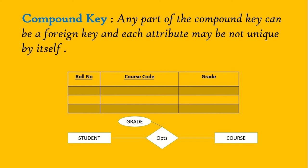Compound key looks like a composite key, but one or more of its attributes are foreign keys. For example, consider the relation 'student opts for courses' — this relation has an attribute grade. To uniquely identify a student's grade in a particular course, we need both roll number and course code together. Here, roll number and course code form a composite key for this table, and both of them are foreign keys from other tables — making this a compound key.